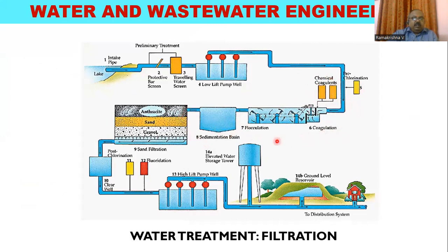This is a later component of the treatment system. We'll talk about sand filtration. This filtration is carried out through a filter bed — a filter medium of sand — with gravel kept as the supporting medium. At the bottom, a strainer with openings and perforated pipes are placed. When raw water is passed through this bed, it passes through the voids of the sand and through the larger voids of the gravel.